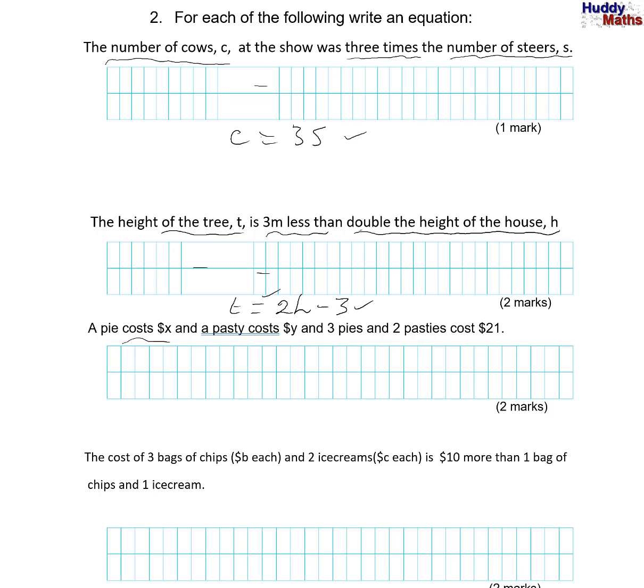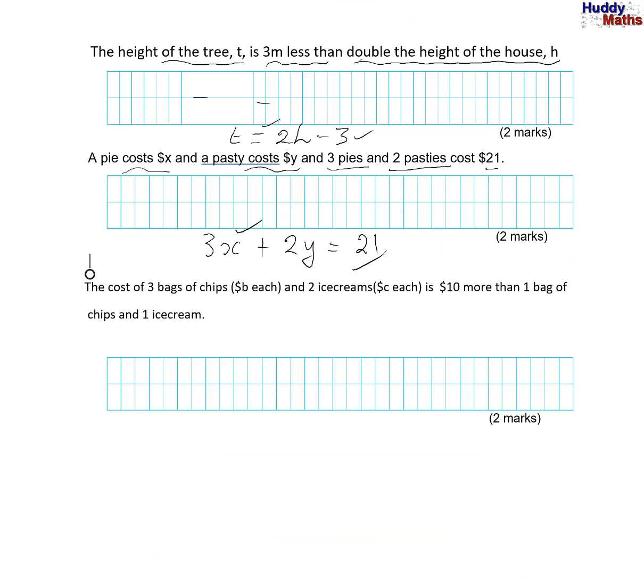A pie costs x dollars. A pasty costs y dollars. Now, three pies and two pasties cost $21. That's an equation. So three lots of x. Three lots of the pie. And plus two pasties. Two y. Equals 21. All in dollars. Because it says they've been done in dollars here. So two marks. So you have to have equals 21. You have to have 3x plus 2y. Let's have a look at the last one.